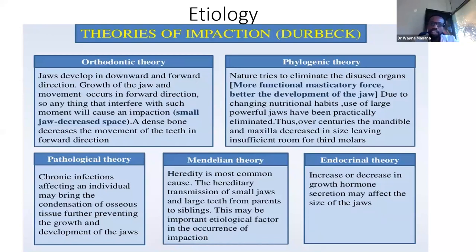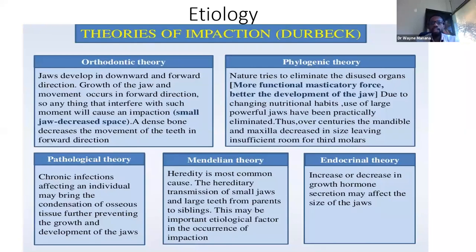There are many theories of impaction. The orthodontic theory holds that jaws develop downward and forward, and anything interfering with jaw growth would result in impaction. The phylogenic theory proposes that nature tries to eliminate disused organs with reduced masticatory forces. This is in tandem with the functional matrix theory, where use stimulates growth of the alveolar process. Patients with TMJ ankylosis in childhood cannot open or chew, so the mandible does not grow, and TMJ ankylosis is strongly associated with impacted teeth.